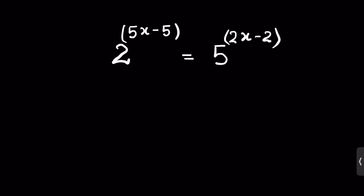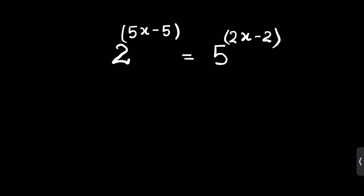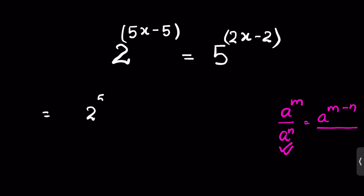2 raised to the power 5x minus 5 can be rewritten using the identity: a raised to the power m minus n equals a raised to the power m upon a raised to the power n. So we can write it as 2 raised to the power 5x upon 2 raised to the power 5. On the right side, we can write 5 raised to the power 2x upon 5 raised to the power 2.